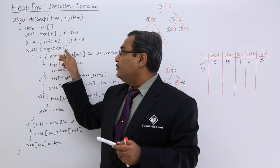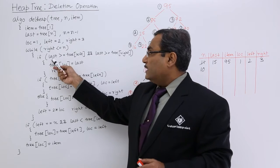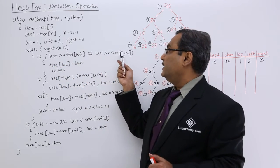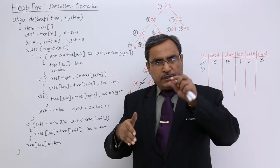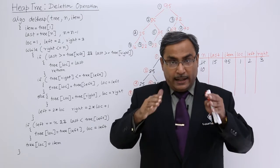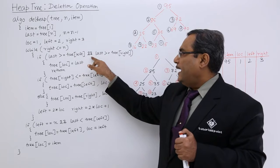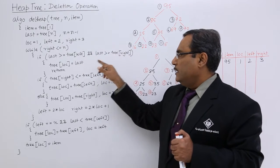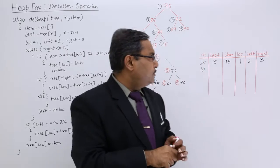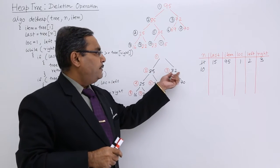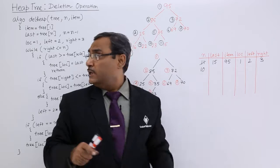While right is less than or equal to n: 3 ≤ 10 is true, so we enter the loop. We check: if last is greater than tree[left] AND last is greater than tree[right], meaning if the last value is greater than both children, then last is placed in the free space and we return. Here, left child is 85 and right child is 72. Last (15) is not greater than or equal to both of them, so this condition is not true.